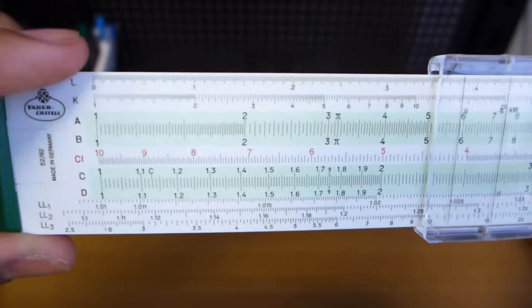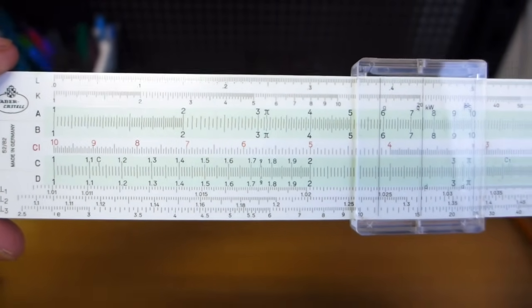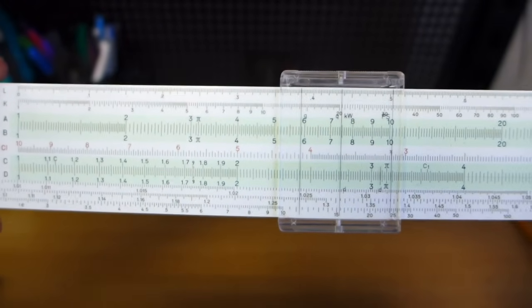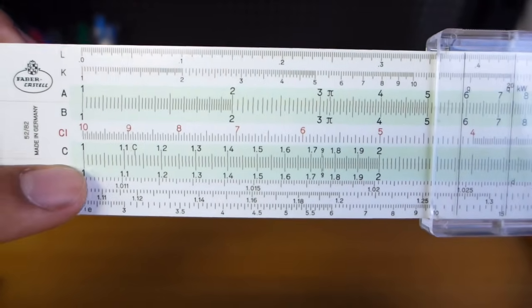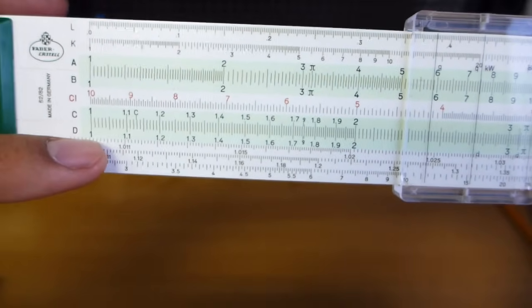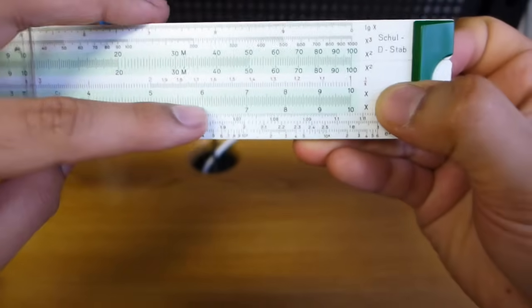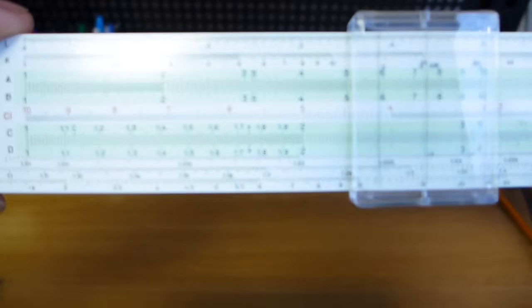In fact, slide rules work on the properties of logs. If you add two logs and then take the anti-log, you get the multiplication of two numbers. As you can see, if we're looking at the C and D scales, the space between 1 and 2 is large, and it gets progressively smaller between each set of two numbers by a logarithmic scale.